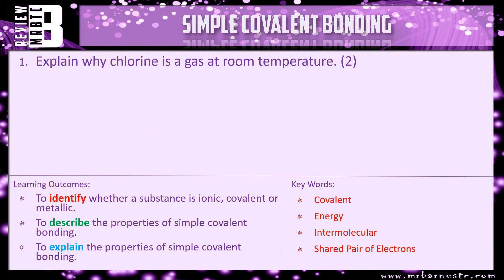Here's a review question: explain why chlorine is a gas at room temperature — worth two marks. Think to yourself: if it's a gas at room temperature it has a low melting point; if it has a low melting point it's simple covalent. Why do simple covalent compounds have low melting points? That's what the question is asking. If you want to have a go, put your answer in the comments and I'll tell you if you're right or wrong.